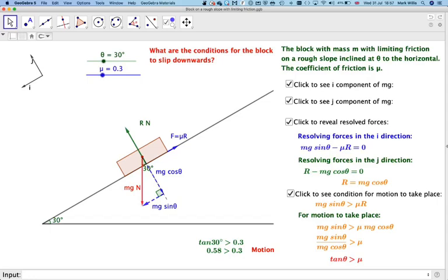So what value of mu do we actually need for there to actually be no motion? At this point, it will be stationary. But greater than that, obviously, then there will be no motion like that.